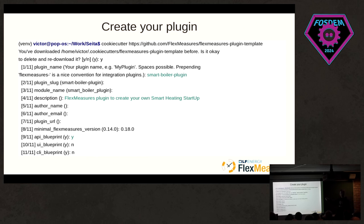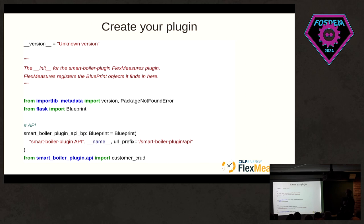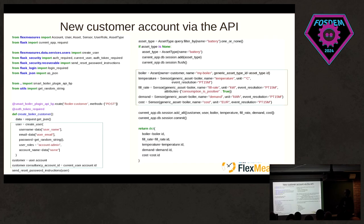The very first step: we provide a cookie-cutter template so you can quickly get up to speed and have your own code structure. You choose a name and a description, and say please give me the API blueprint. Blueprint is a word from the Flask system because FlexMeasures is a Flask application. You get some boilerplate like this, and this is the one endpoint we're defining here.